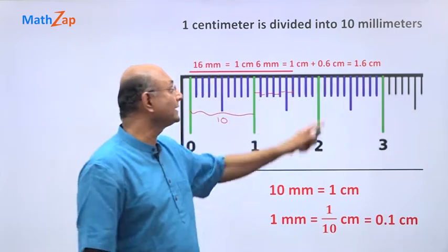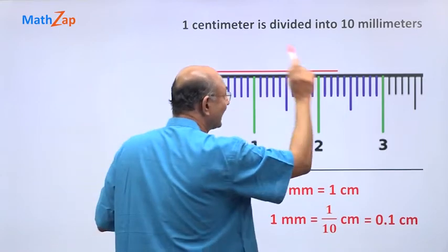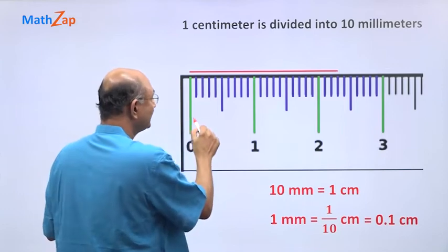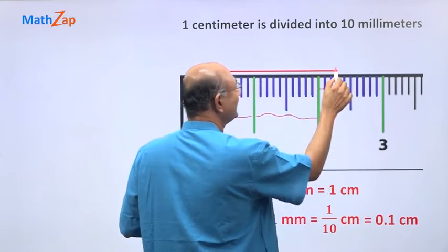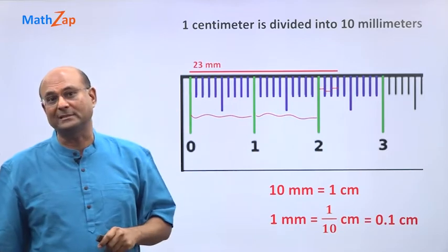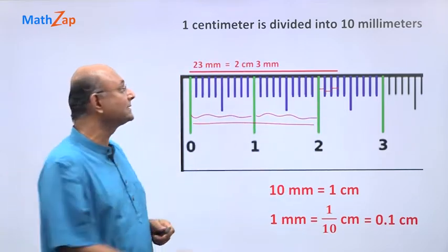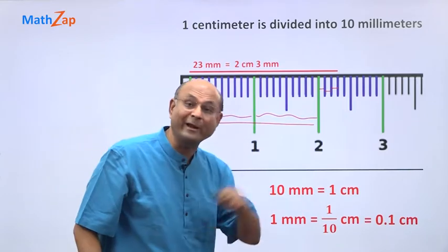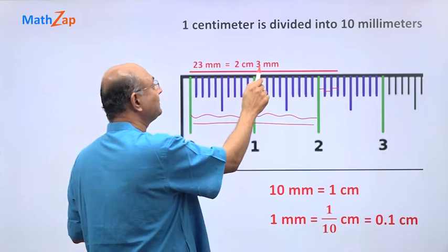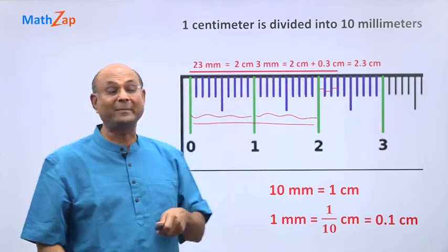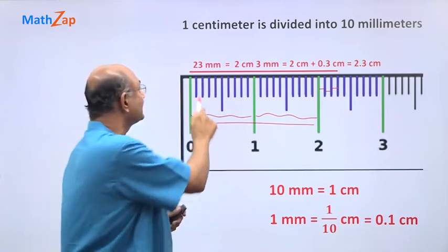Let us look at one more example. Here I have a slightly longer line. This is 10 markings, then 10 more, giving 20 markings total. Counting on: 21, 22, 23 — so this is 23 millimeters. I can also say it is 2 centimeters and 3 millimeters. Since 3 millimeters is 3 times 0.1 = 0.3 centimeters, 2 centimeters 3 millimeters equals 2.3 centimeters.